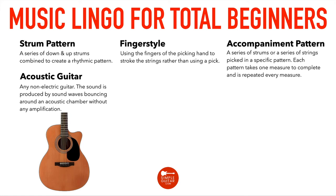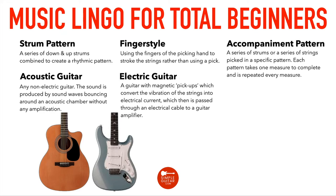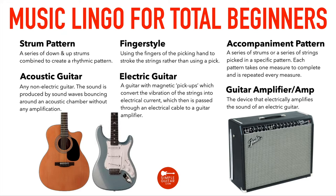An electric guitar is a guitar with magnetic pickups which convert the vibration of strings into electrical current, which is then passed through an electrical cable to a guitar amplifier. A guitar amplifier, or amp, is the device that electrically amplifies the sound of an electric guitar and blows it out through a speaker so all your neighbors know how awesome you are.